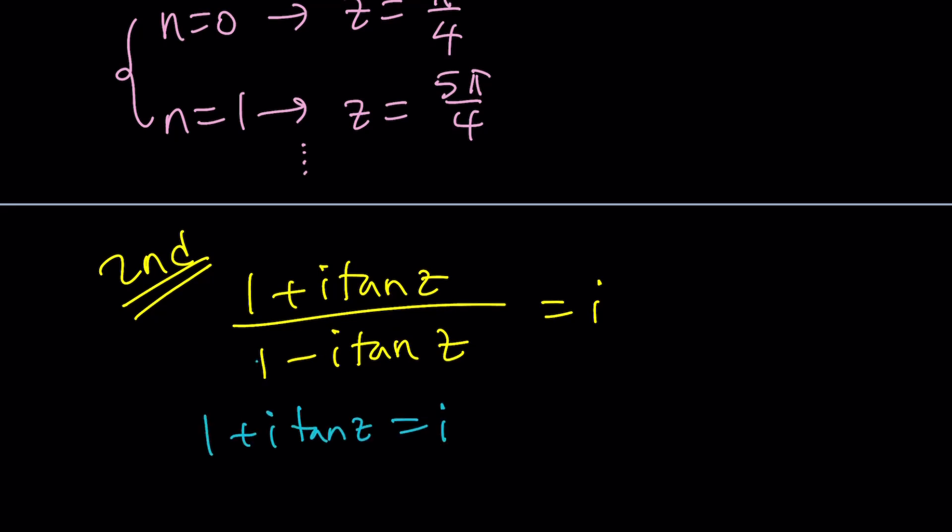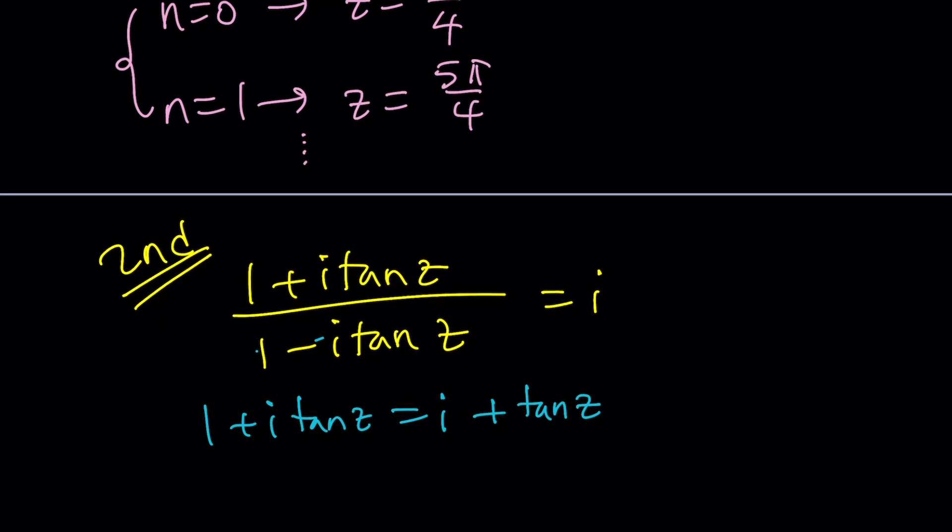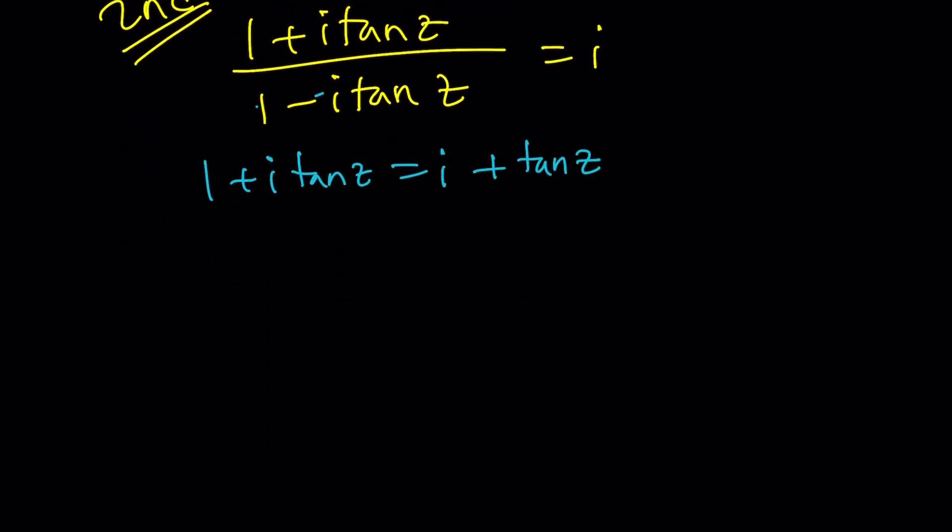Now, if you go ahead and cross-multiply, you get the following. i times 1 is i. i times negative i is plus 1 tangent z. Awesome. See, it's that easy. Cross-multiply. i squared is negative 1. You got it.